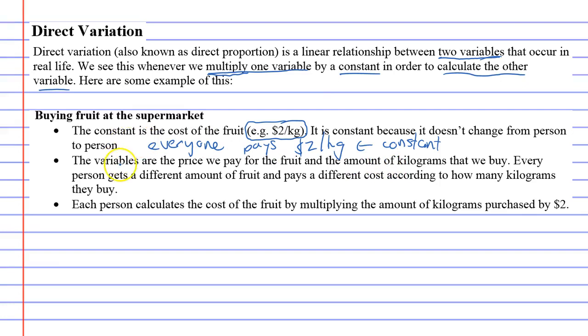There are two variables, though, that do change from person to person. And the variables that change are this. First of all, second of all, actually, the price we pay for the fruit, and first of all, the amount of kilograms that we buy. I should have put this in a different order.